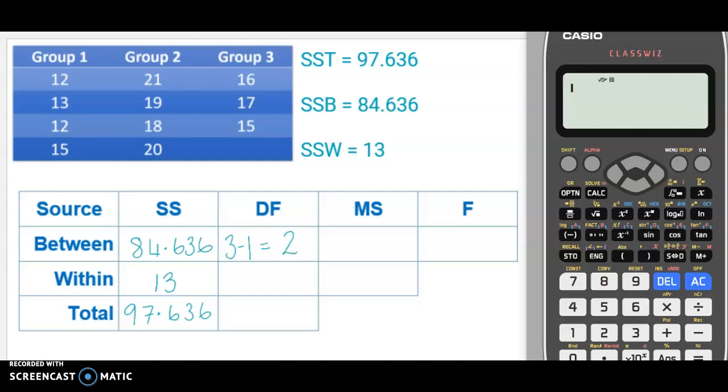Our degrees of freedom for our within is the total number of data in the question. So in this one, it is 11. And we subtract the total number of levels. So the number of groups in this one is 3. So our degrees of freedom is 8.